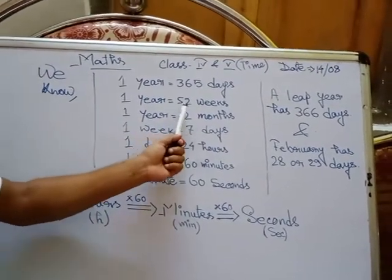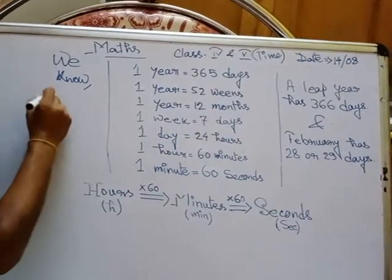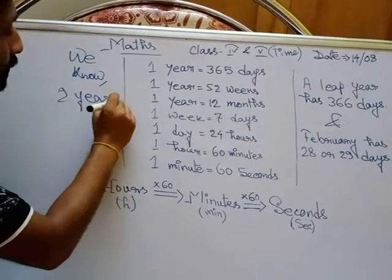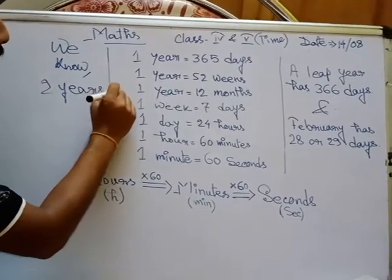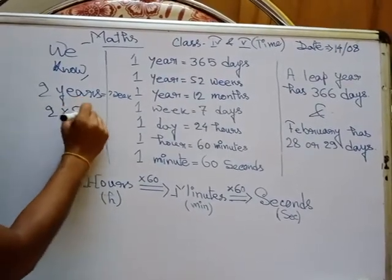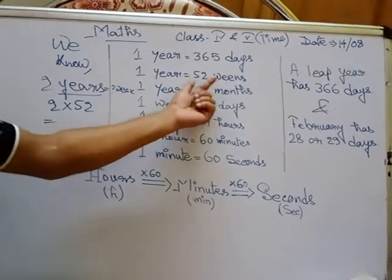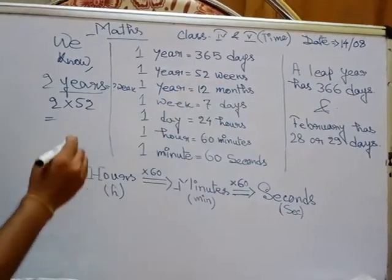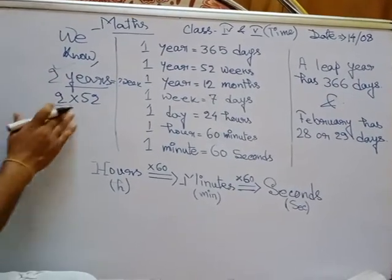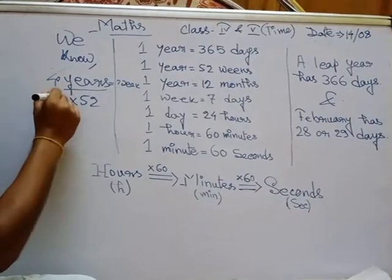1 year is equal to 52 weeks. If it is 2 years, that means 2 multiplied by 52, because each and every year has its own 52 weeks. So if it is 2 years, we should multiply by 2; if it is 4 years, we should multiply by 4.